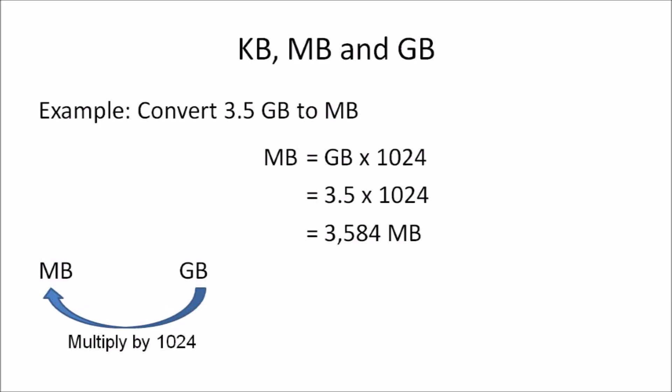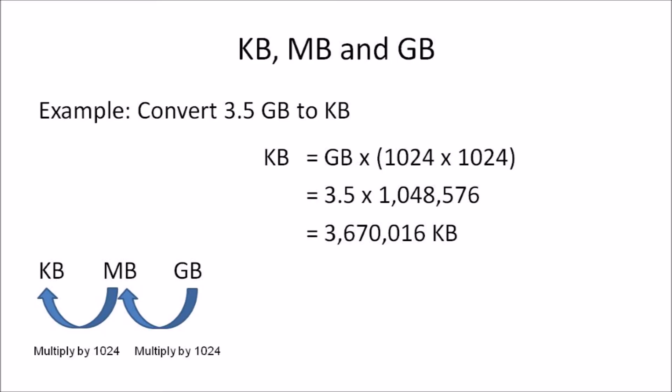Example 5: Convert 3.5 gigabytes to megabytes. Again, we're converting a larger unit to a smaller unit, so the answer will be higher than 3.5. The formula is: megabytes = gigabytes × 1024. Substituting: 3.5 × 1024 = 3,584 megabytes.